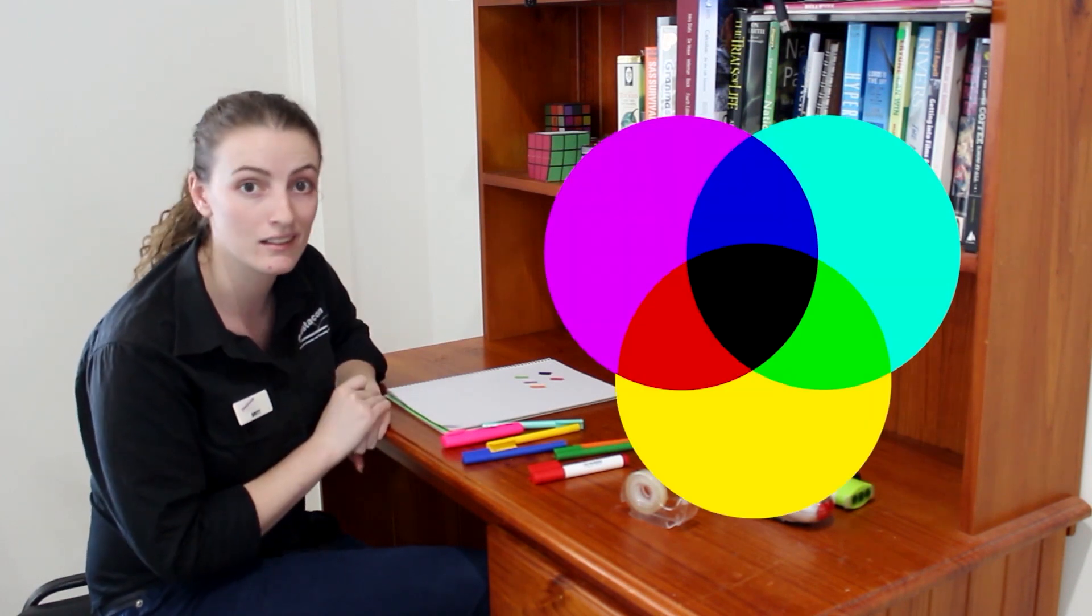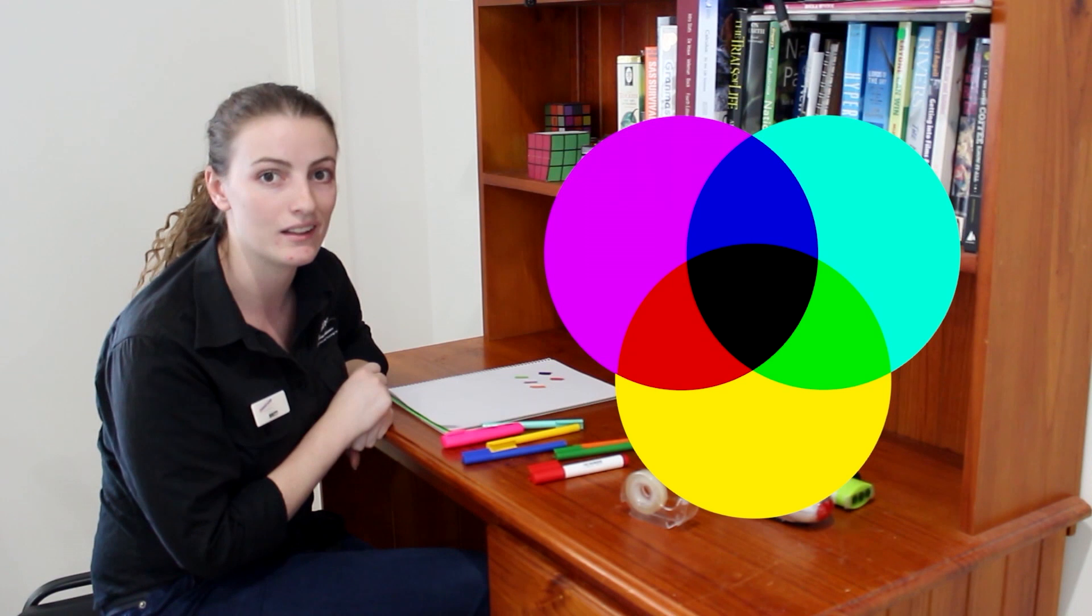So this is called subtractive colour mixing. It's what printers use to make different colours. If you've ever had to reload the ink in your printer, you'll know that the three colours that you add are cyan, magenta and yellow. Those are the primary colours when you're taking away light.